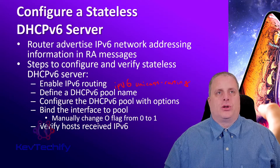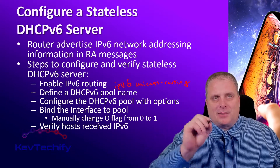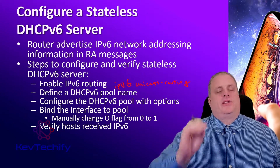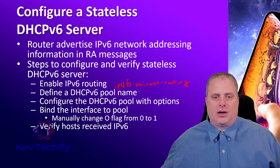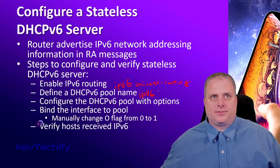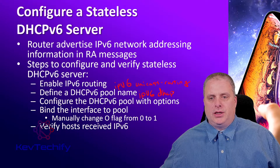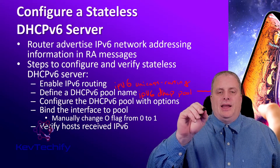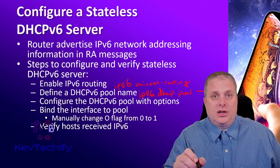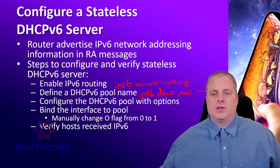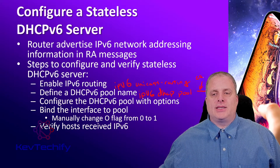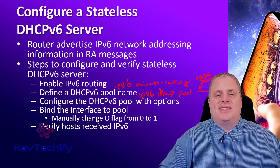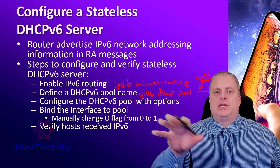The next step is you need to define a pool. The command is IPv6 DHCP pool, and then you put the pool name. What that command does is it enters into the configuration mode of that pool. If that pool doesn't exist, it creates it. This pool name is case-sensitive, so you've got to make sure you have all your capitals, dashes, and numbers in the right spot.